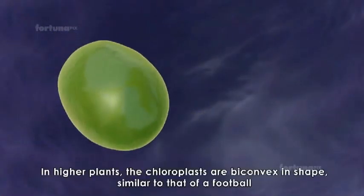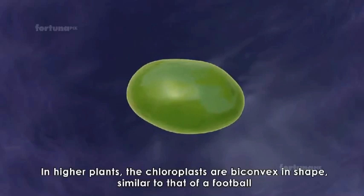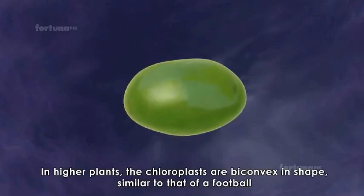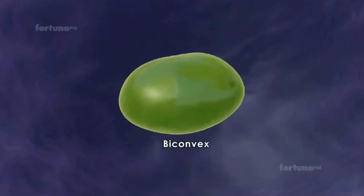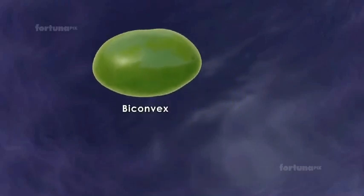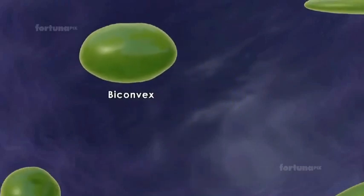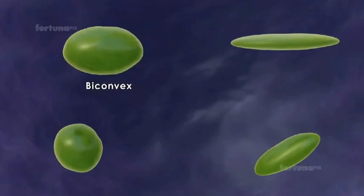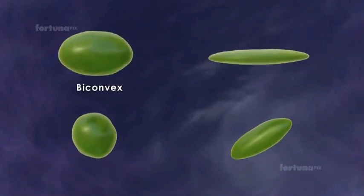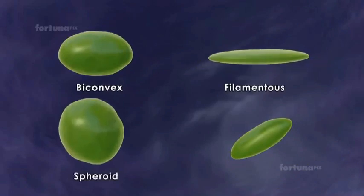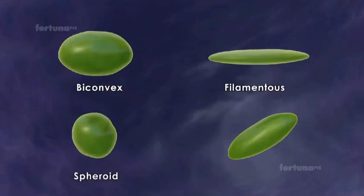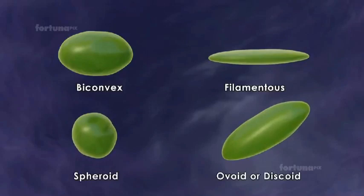In higher plants the chloroplasts are biconvex in shape, similar to that of a football. However, in some plants chloroplasts will occasionally take on other shapes such as filamentous, spheroid, ovoid, or discoid.